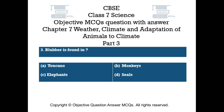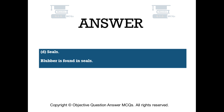Question number 3. Blubber is found in: Option A: Toucans. Option B: Monkeys. Option C: Elephants. Option D: Seals. The right answer is Option D — Seals. Blubber is found in seals.